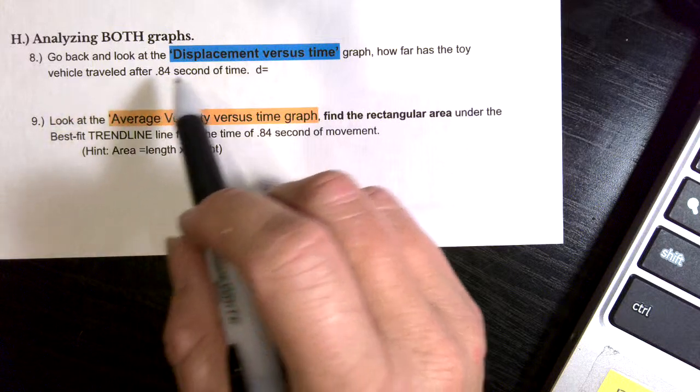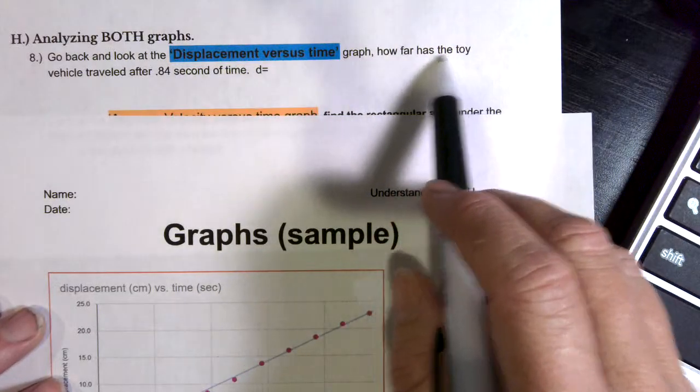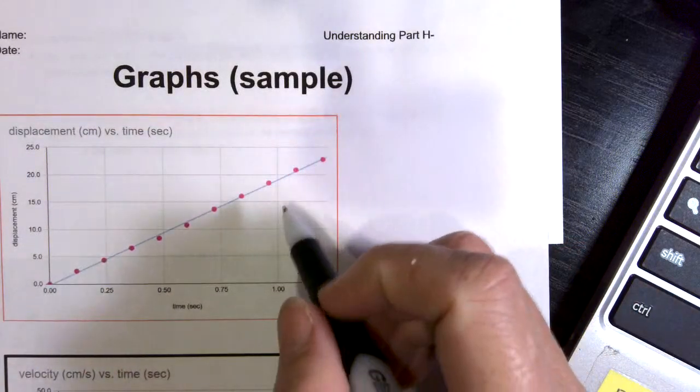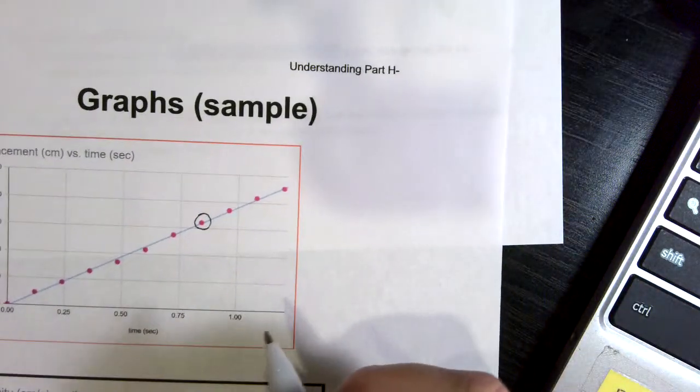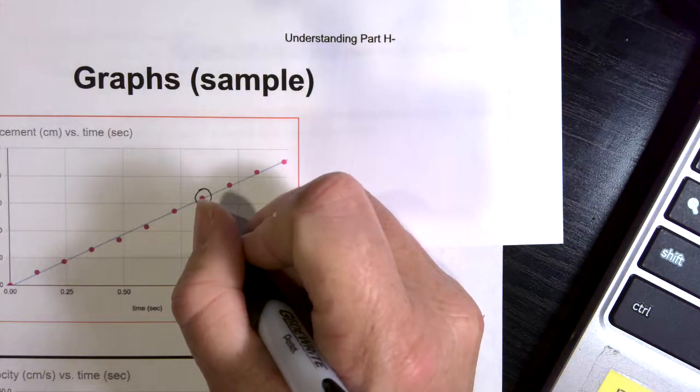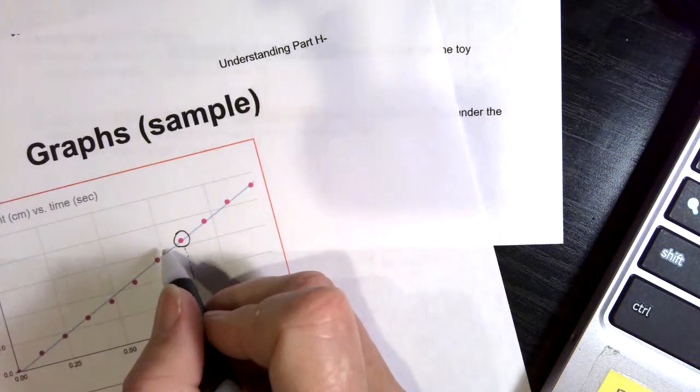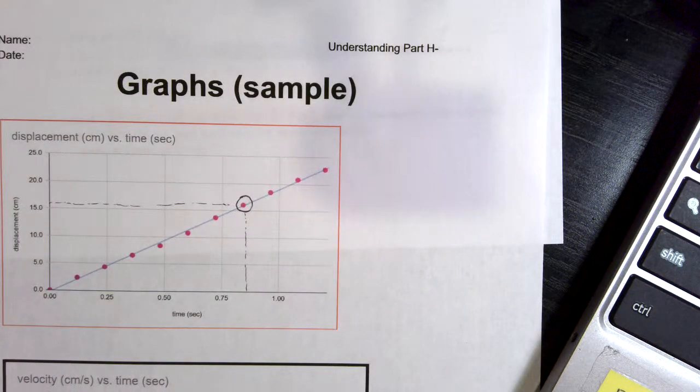Alright, so go back and look at the displacement versus time graph, right there. And how far has the toy train traveled in 0.84 seconds of time? So how would I know what that travels? Well, I want to look at my data.